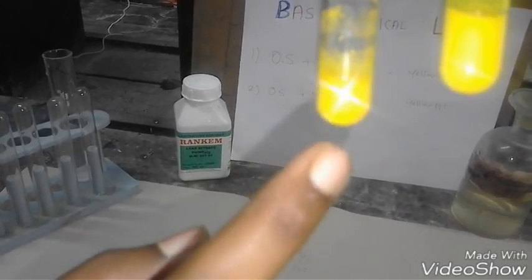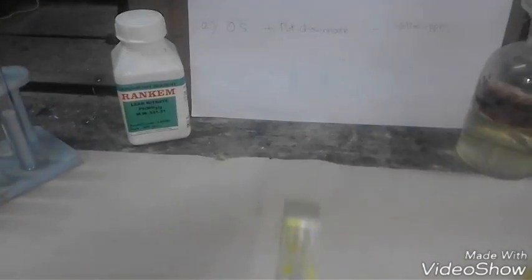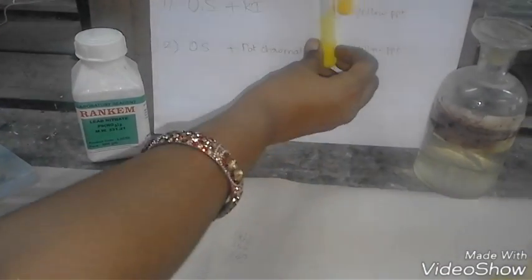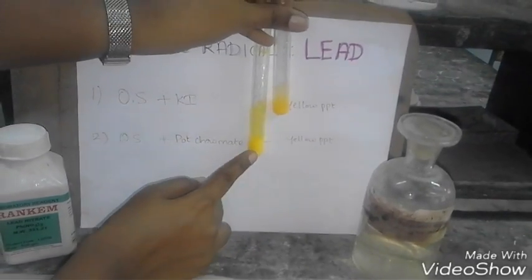These two yellow precipitates indicate the presence of lead, so that the lead is confirmed. The first yellow precipitate is darker than the second.